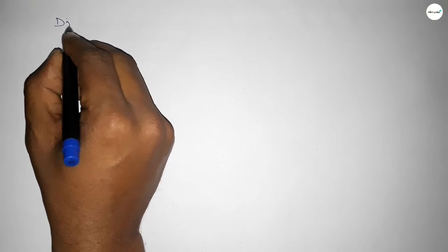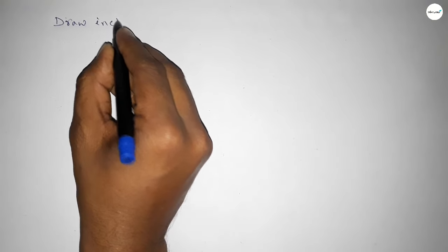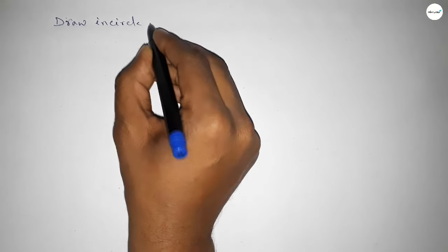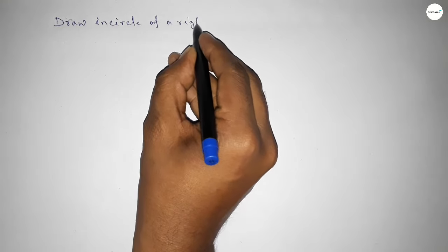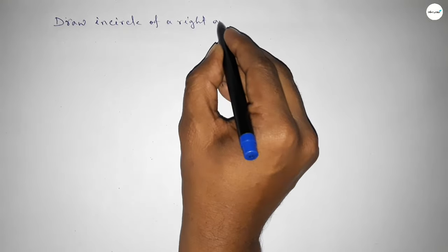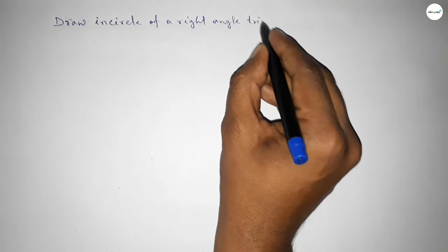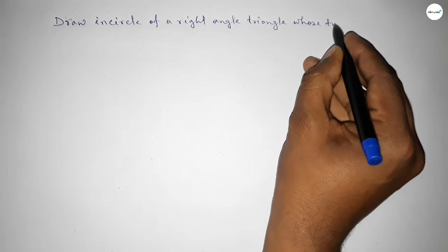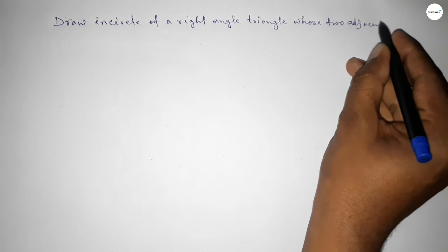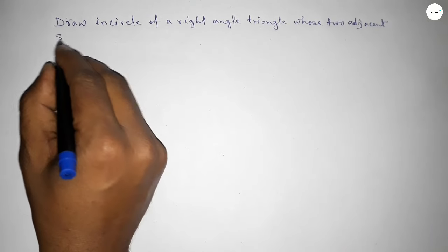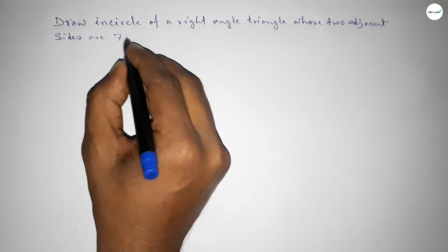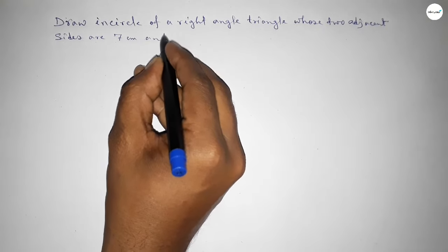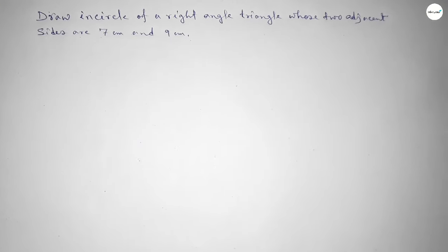Hi everyone, welcome to SH Sir Classes. Today in this video we have to draw the incircle of a right angle triangle whose two adjacent sides are 7 centimeters and 9 centimeters. So let's start the video.